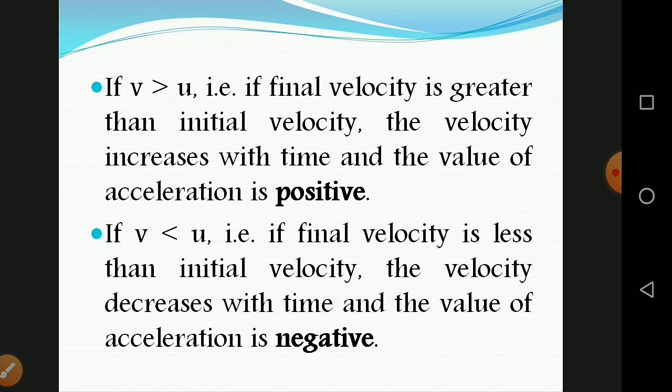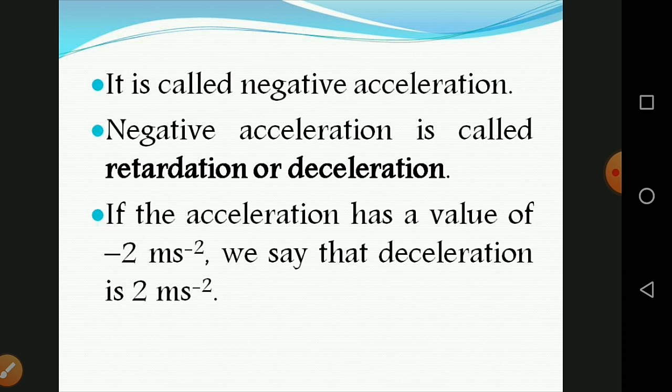Negative acceleration is called retardation or deceleration. For example, if the acceleration has a value of −2 m/s², we say that the deceleration is 2 m/s². Thanks for watching — don't skip the videos. In the next class we shall discuss example problems and the graphical representation of motion along a straight line. Thank you.